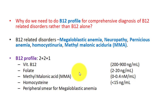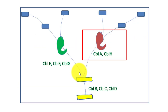Now let's talk about what intracellular metabolism of vitamin B12 looks like. Vitamin B12 intracellular metabolism involves about 10 proteins, including those two enzymes. Let's talk about these 10 proteins — it's not that difficult, it's easy.